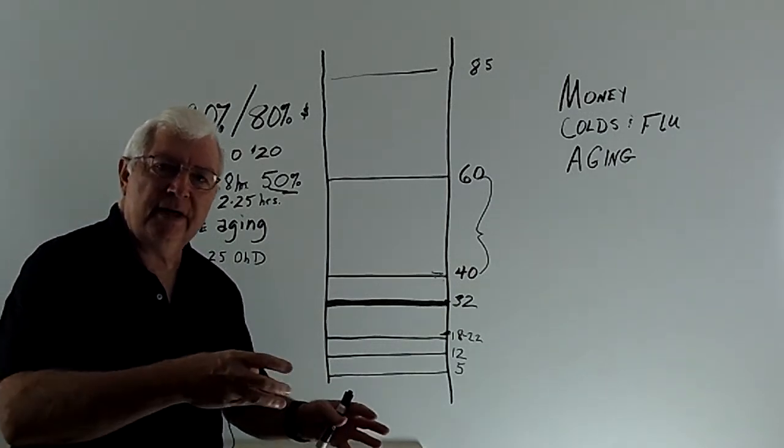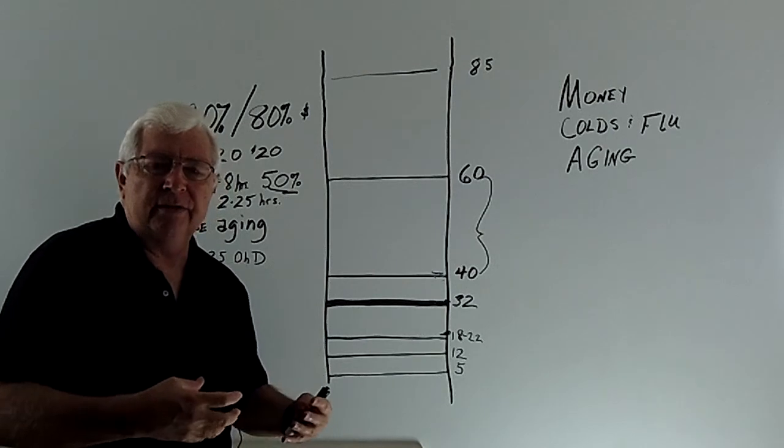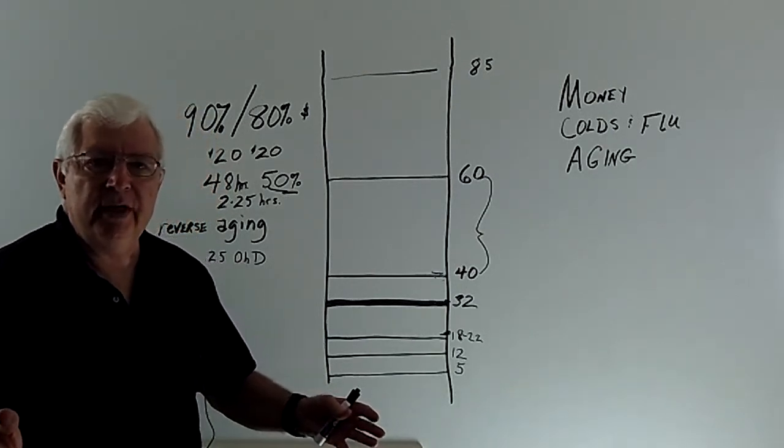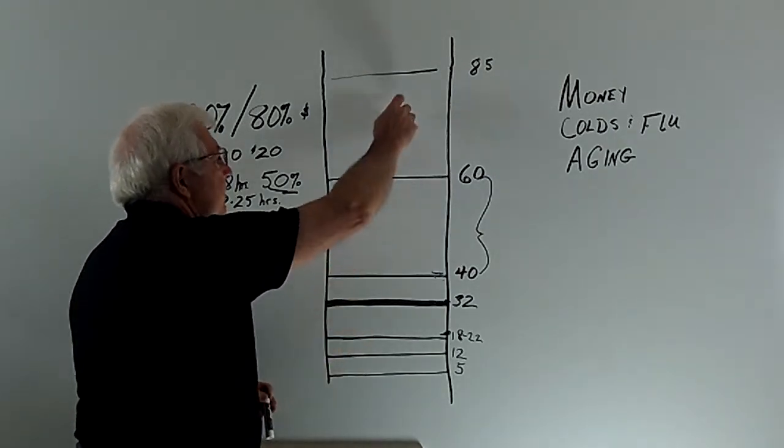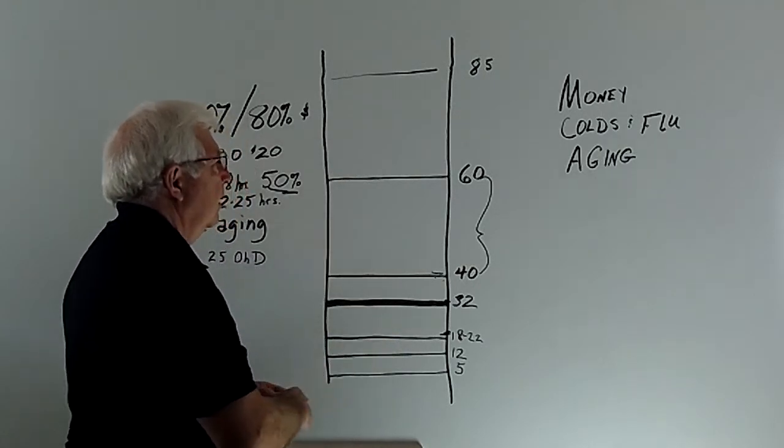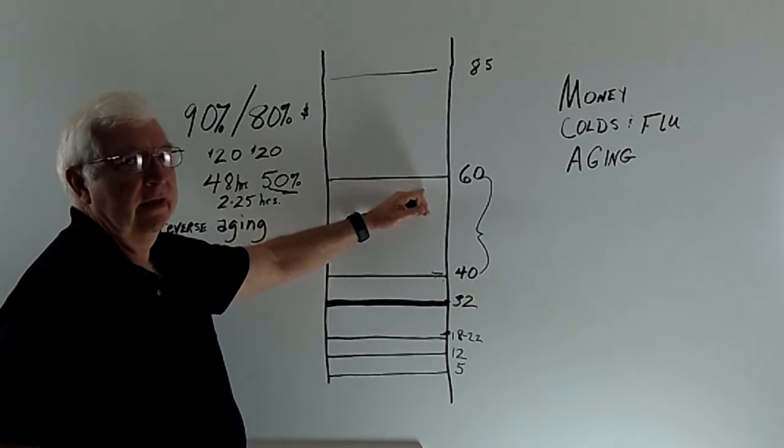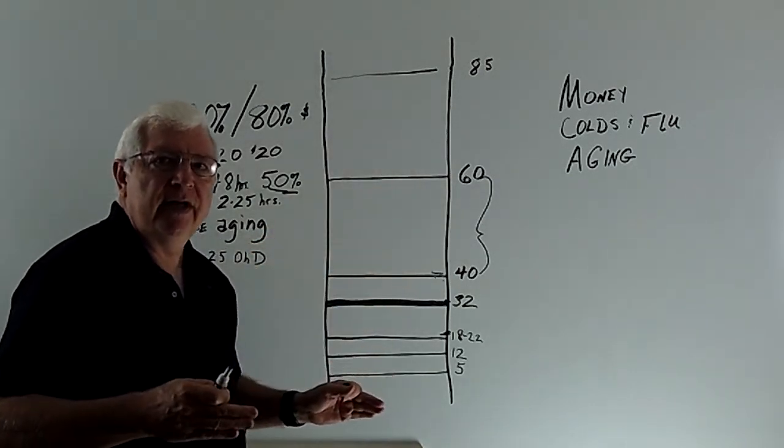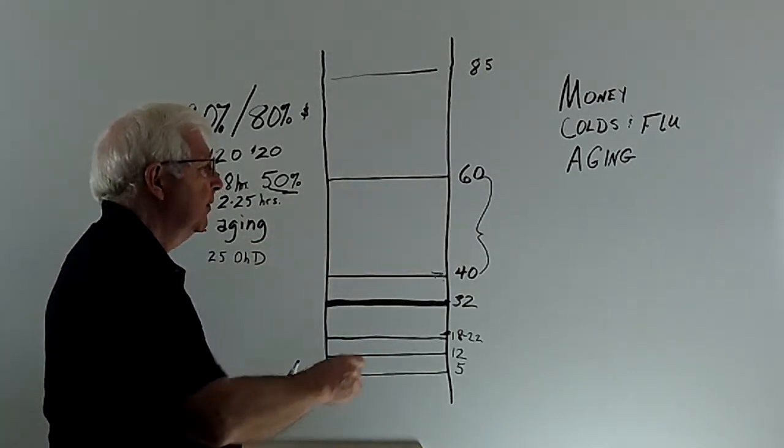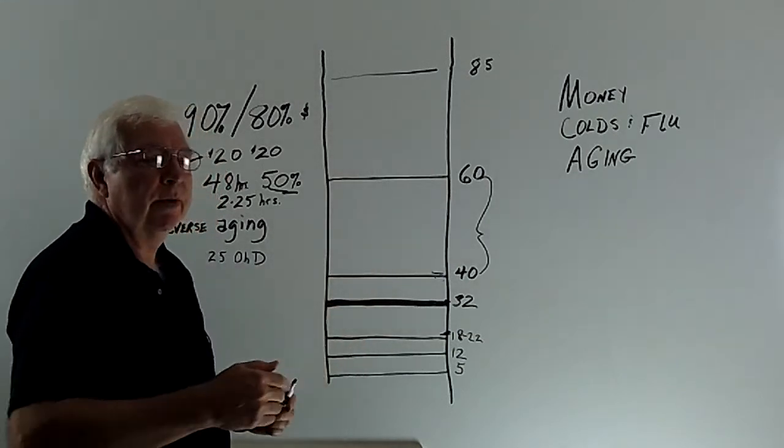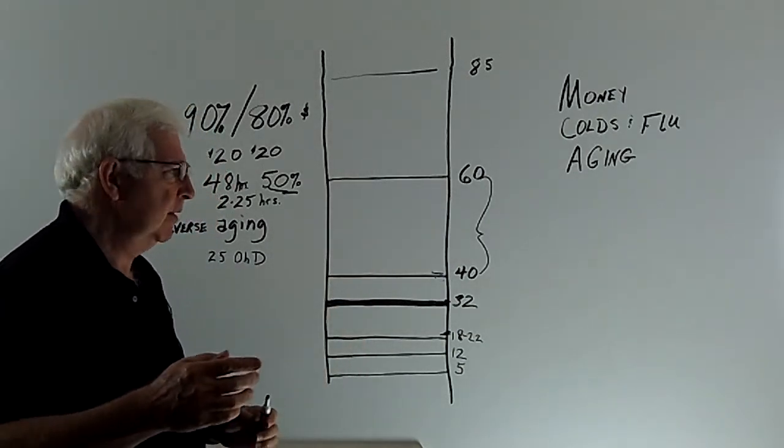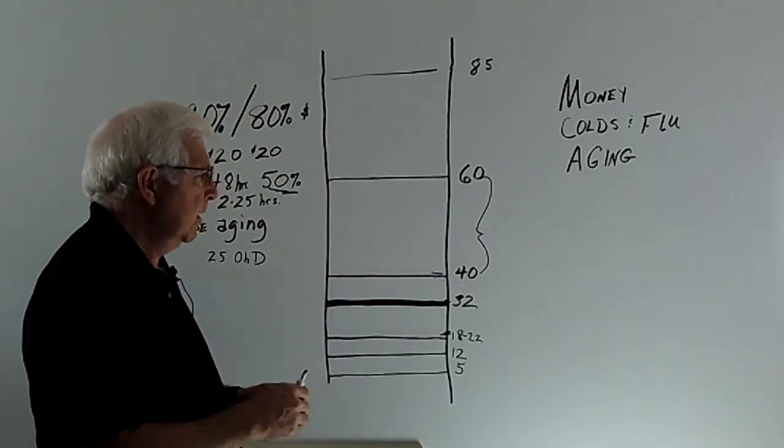So, consequently, what D does is the body converts it into calcitriol. And the calcitriol is what the body uses to repair the damage on the inside of the body, including the damage from cancer. So if we can assume with our bar graph here, that their scale was anywhere from 40 to 60, a safe range.